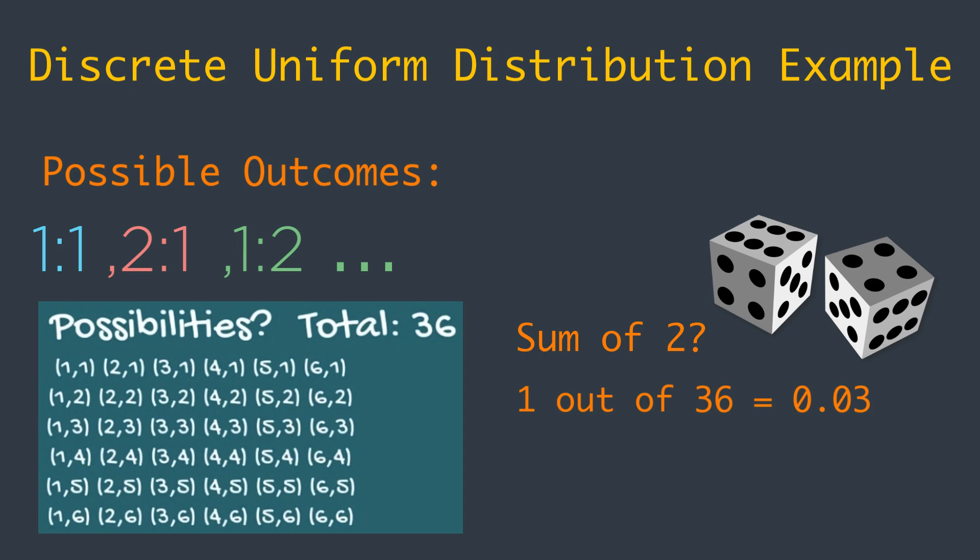Similarly, the probability of getting a sum of 3 is given by the number of combinations that give a sum of 3 divided by 36. If you think about it, 1 and 2 and 2 and 1 are the only possibilities. Therefore, the probability is equal to 2 divided by 36, or simply 0.06.